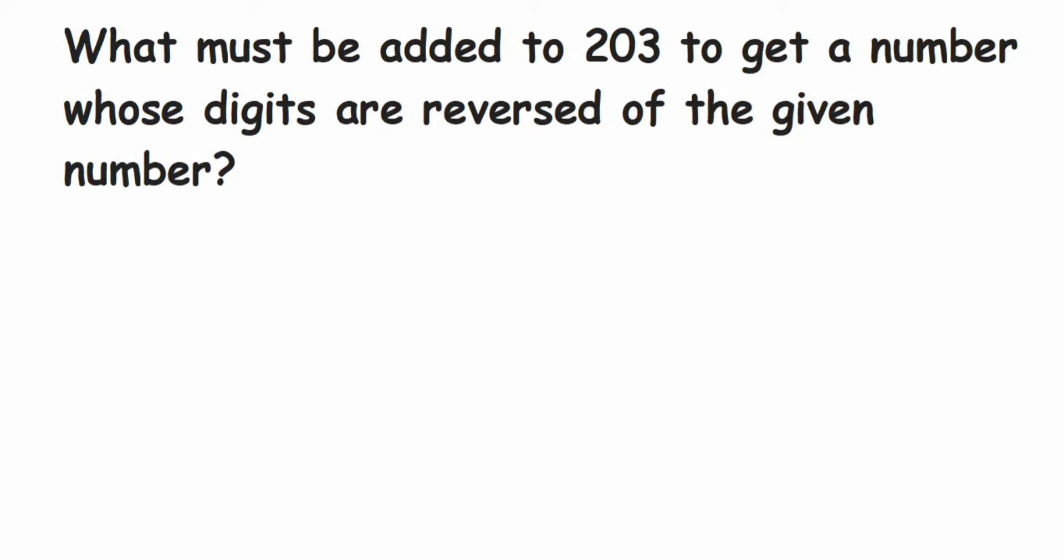Hey everyone, so here is a question from the chapter Knowing Our Numbers. It's a really simple question that can come for one mark. The question is: what must be added to 203 to get a number whose digits are reversed of the given number?